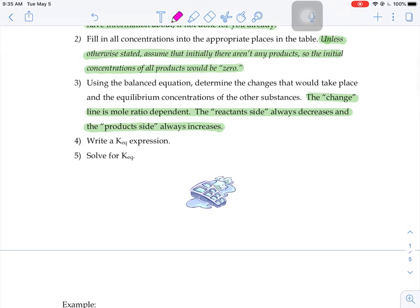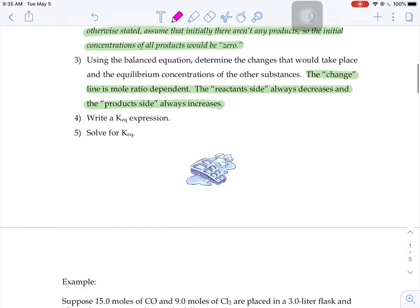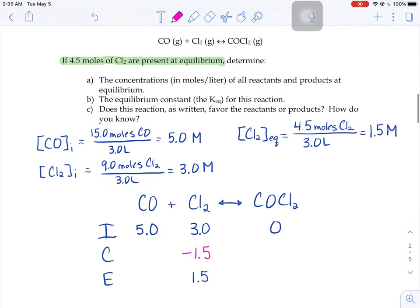Meaning if it's a one-to-one ratio, the change is going to be the same number. If it's a two-to-one ratio, you'd have to double the change number. The reactant side always decreases, the product side always increases.